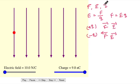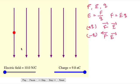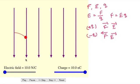Let me show you with an animation. See here — in this simulation, the applied electric field is 10 Newton per coulomb. The charge is around 10 nanocoulomb, which is a positive charge. Now let us see in which direction it is deflected. The deflection shows that the force acting on the positive charge is in the direction of the electric field.